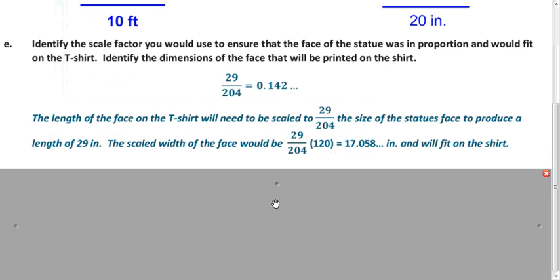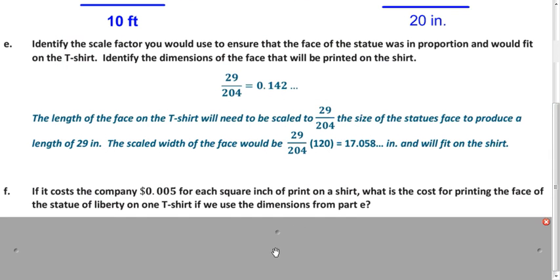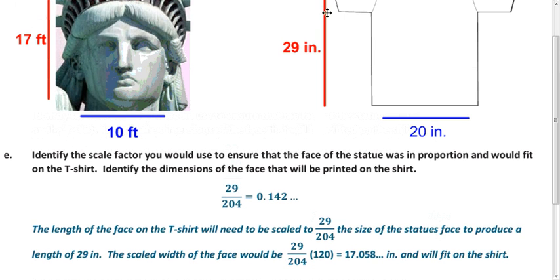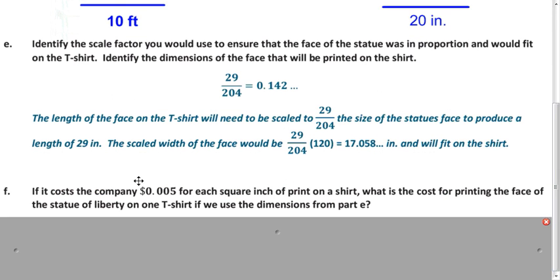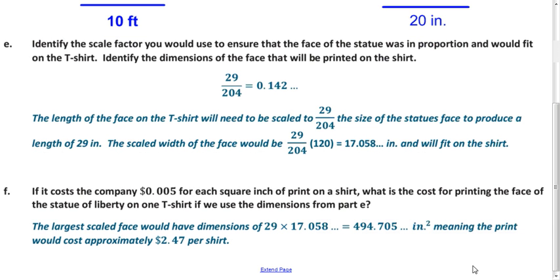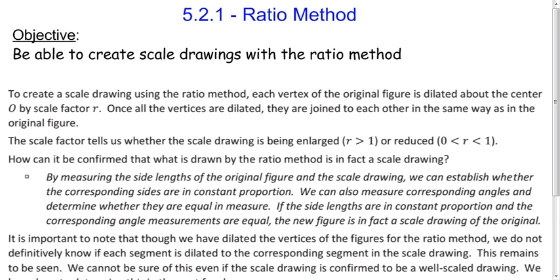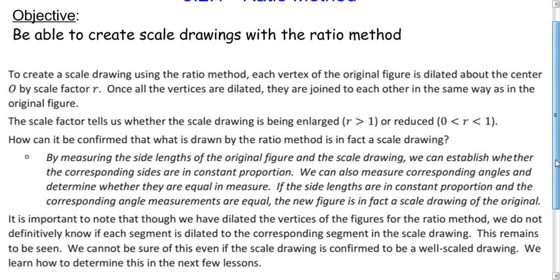Finally, with those dimensions — 29 inches by approximately 17.058 inches — and a printing cost of $0.005 per square inch, we multiply the length by the width to find the area, then multiply by $0.005 to find the cost. That gives approximately $2.47 per shirt. In this lesson we learned how to use the ratio method to make scale drawings. Here's a little overview of what we covered — thanks for watching.